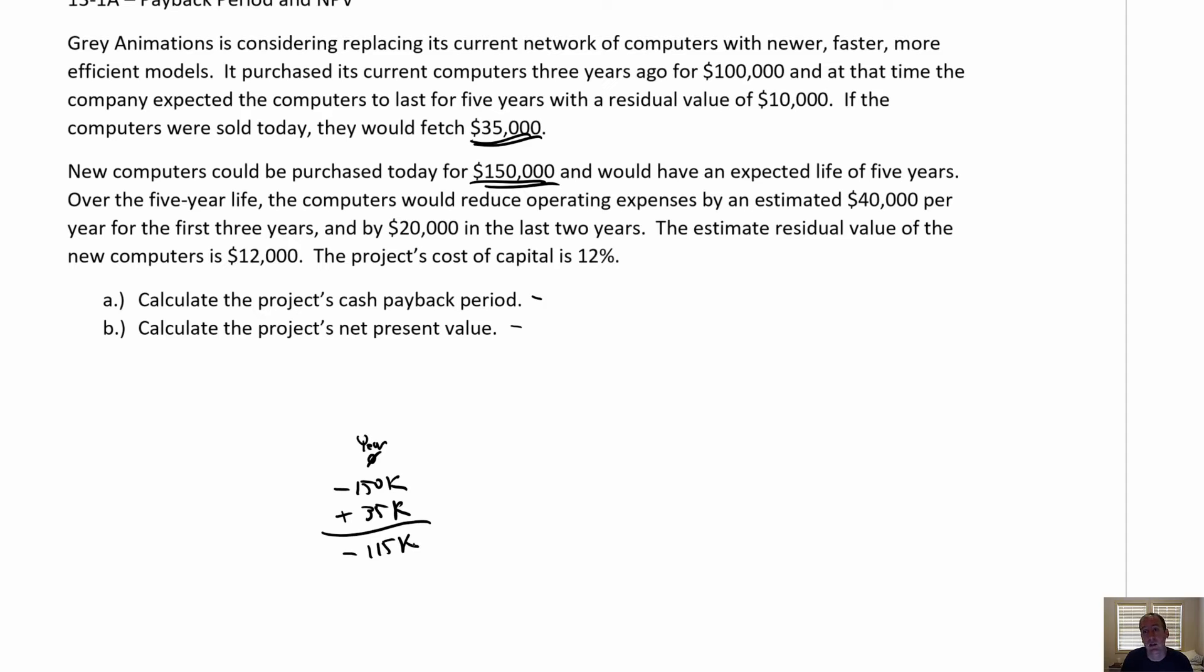So we're just outlaying $115,000. That's our initial investment here to get these computers going. Now, the reason we're buying the new computers, maybe it's faster workflow, saving our employees time. Maybe they're more efficient computers, saving us power costs. Whatever the reason, we believe that these computers are going to generate a savings to us. As I mentioned at the end of the last video, this is all estimates, right? Even when it's given to you in a question, somebody's had to estimate this. And so if you're looking at making these types of decisions, you really want to scrutinize the estimates.